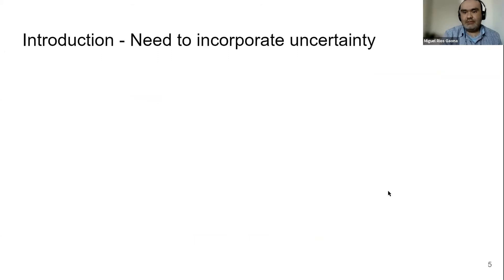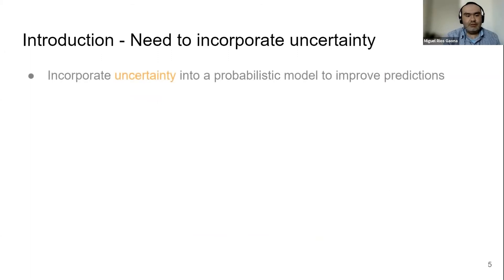So how can we tackle the temporal shift? One way is to incorporate uncertainty into a probabilistic model to improve predictions, but we want to keep the representation power of neural networks.